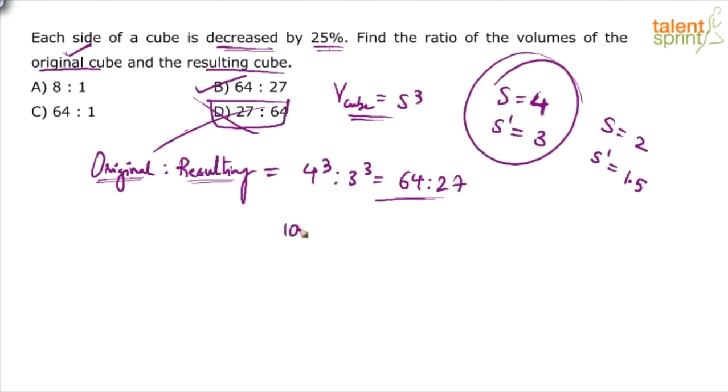Or you can take, let's say, original side is 100, the new side is 75. So 100³ is to 75³. But there is a lot of calculation: 100×100×100 is to 75×75×75.